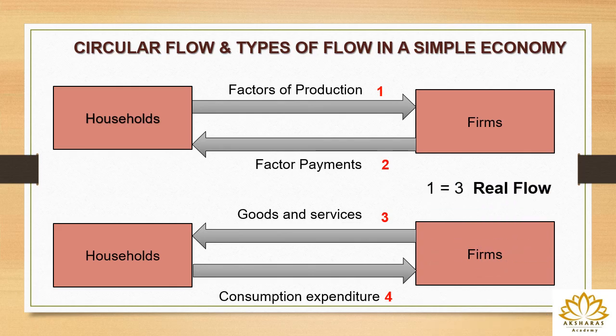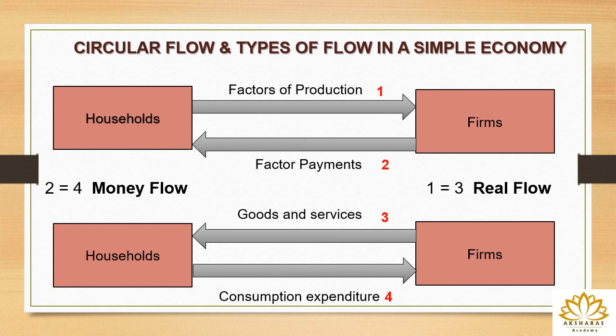In this simple economy: (1) equals (3), meaning factors of production equals goods and services — this represents a physical flow of goods and services, so it is called real flow. And (2) equals (4), meaning factor payments equals consumption expenditure — this is a money flow. These are the two types of flow: real flow and money flow.